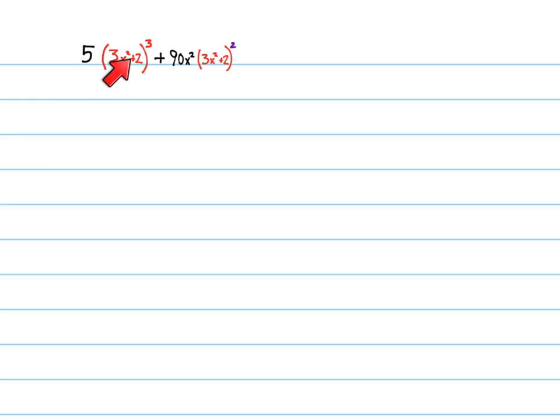So we have that, and then the other thing we have is 3x squared plus 2, and here's a 3x squared plus 2. Here there are two of them, here there are three of them. So I'm going to factor out the smallest power of that. So these are the things that are coming out of my expression. So I took a 5 out, I took 2 out of the 3 of these, so I have one of those left over.